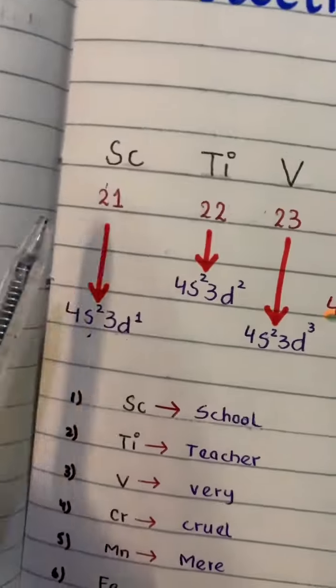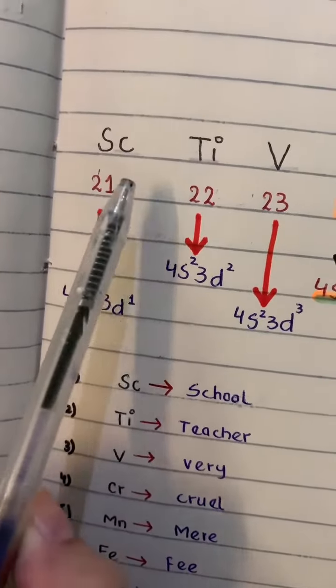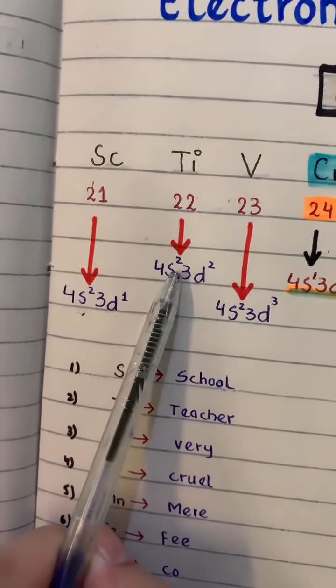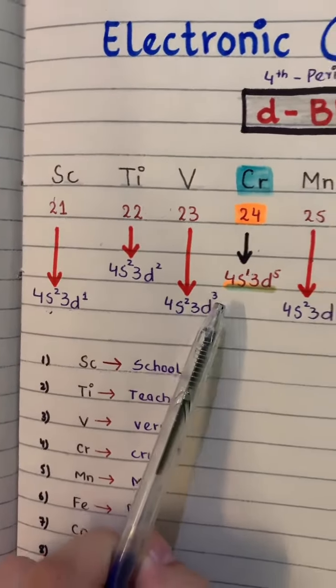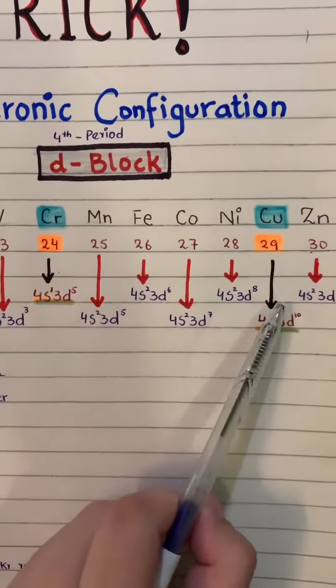So for scandium it is 21, so you have to do 2s and 1d. To be with titanium, 2s and 2d. To be with vanadium, 2s and 3d. To be with chromium and copper, exceptional - put them aside.